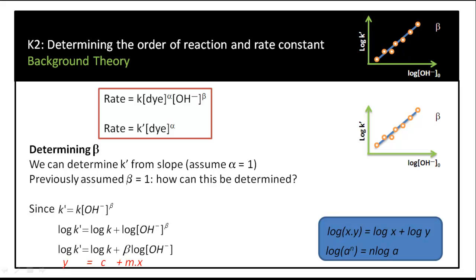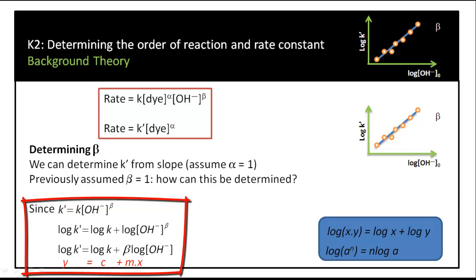This time we are not going to assume beta equals 1; we are actually going to determine what beta is. When we simplify the full rate law into pseudo first order conditions, k-prime equals k times the concentration of hydroxide ions to the power of beta. Taking the log of both sides and applying log rules gives: log k-prime equals log k plus beta times log of hydroxide ion concentration. This relates to the equation of a straight line, so plotting log k-prime on the y-axis against log of hydroxide ion concentration on the x-axis, the slope of the line will be beta.